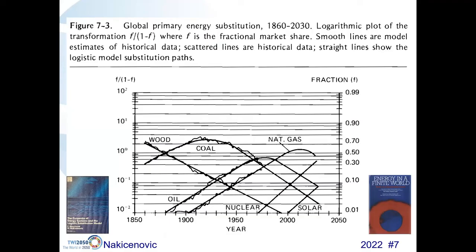I met Cesare Marchetti very soon when I was at IIASA, and we started working on what we call the logistic substitution model, trying to understand the dynamics of energy and other systems. The publication Energy in a Finite World from 1981 is definitely the first truly global energy study with scenarios going all the way to 2030. Whether the scenarios are correct or wrong is not the issue — the issue is that the picture outlines possible future dynamics and that one can add new scenarios. If I were doing this today, I would not have been so optimistic about nuclear, and I would have advanced solar a little bit earlier.